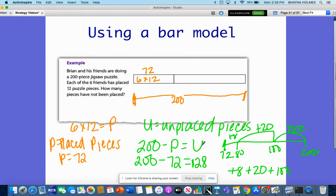And I didn't even have to subtract here. So how many pieces have not been placed? Unplaced pieces equals 128.